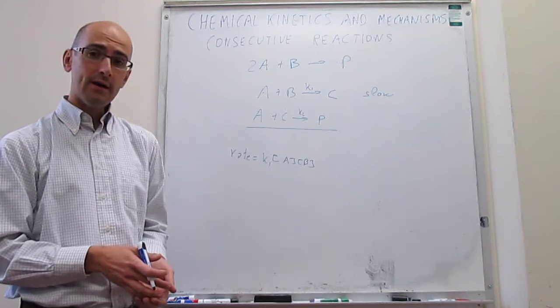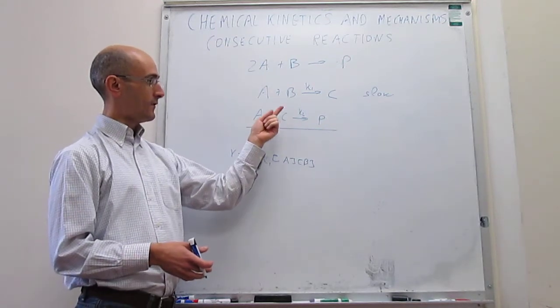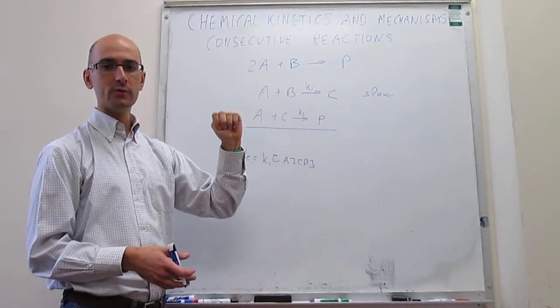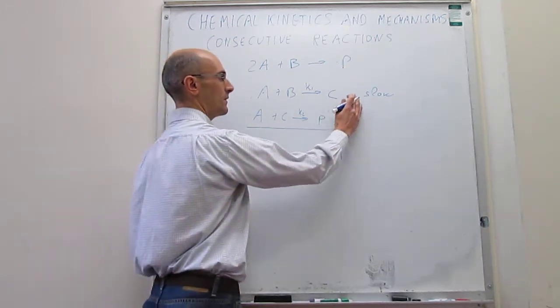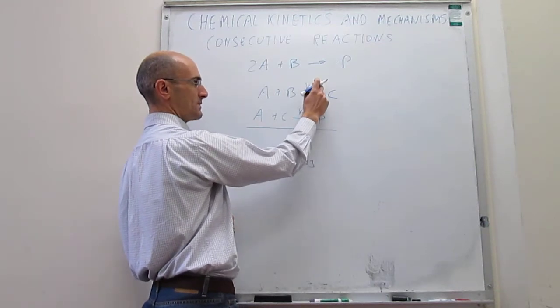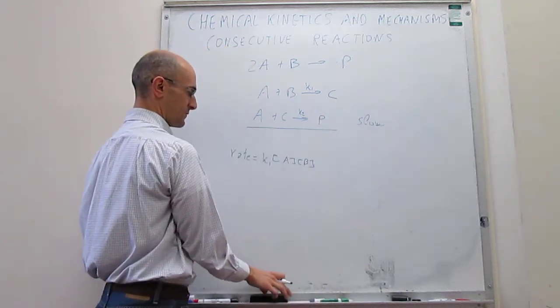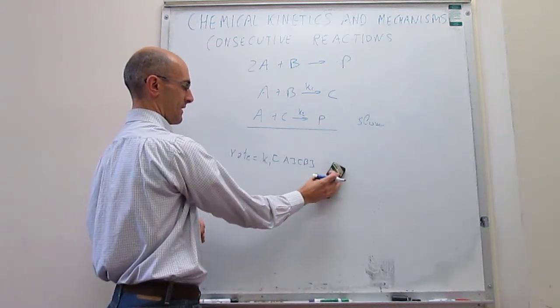So that would be the rate law in this particular case. But let's assume, just for the sake of completeness, that there's a different reaction in which the first step is not the slow one. When you compare these K2 and K1 constants, it happens that this is much, much greater than that one. And that would mean that this is the slow step. And then the first step is the fast step.